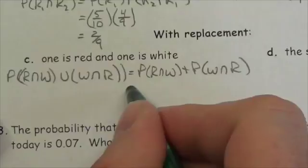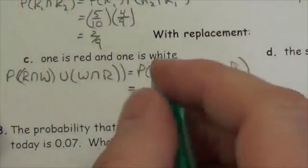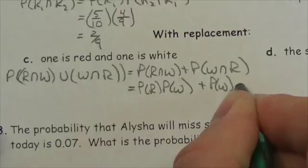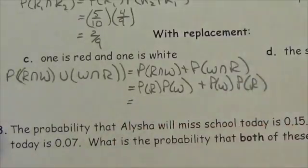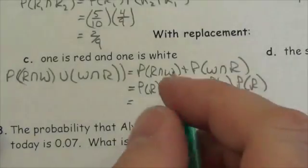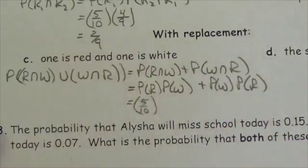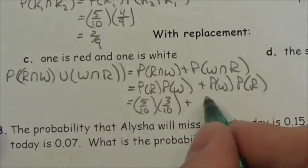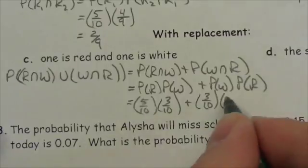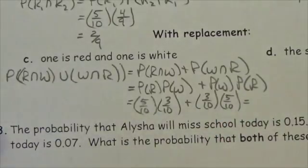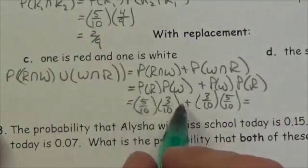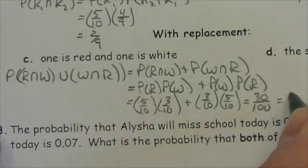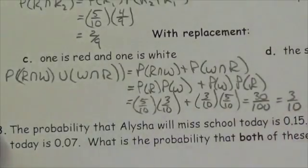Because we're putting the marble back, these events are independent. So this is the probability of red times the probability of white, plus the probability of white times the probability of red. The probability of red is 5 out of 10 and the probability of white is 3 out of 10, in both orderings. That gives us 15 out of 100 plus 15 out of 100, which is 30 out of 100, or 3 tenths.